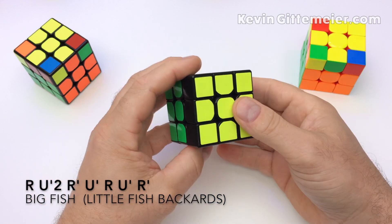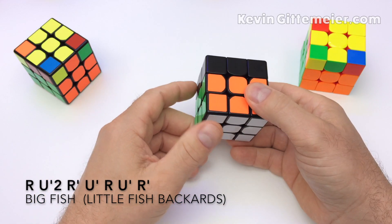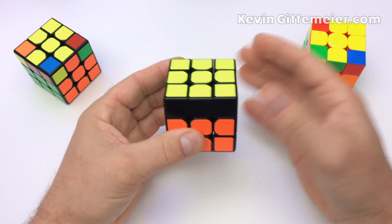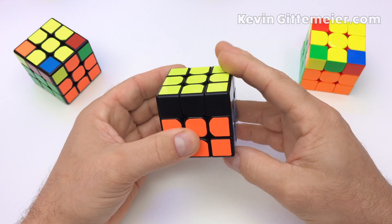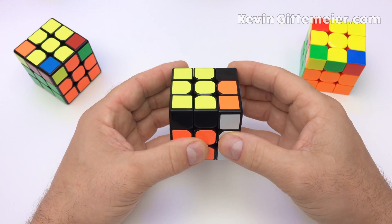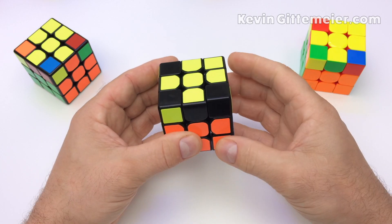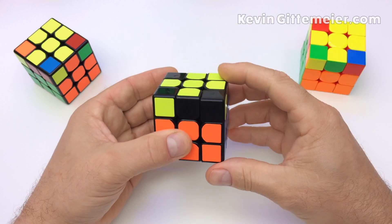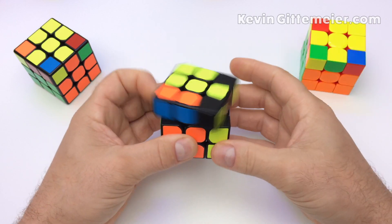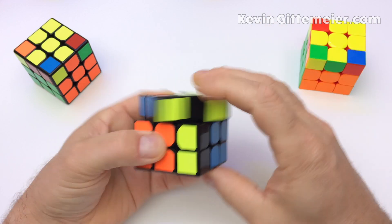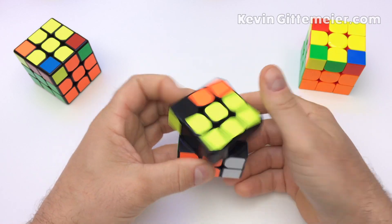Once you know an algorithm well it becomes intuitive to perform it forward and backwards and one quick practice trick is if you have this solved and you perform little fish, right, up, right, up, right prime, it actually makes big fish so you just do the inverse. If you do big fish it makes little fish so that's a quick way to practice.